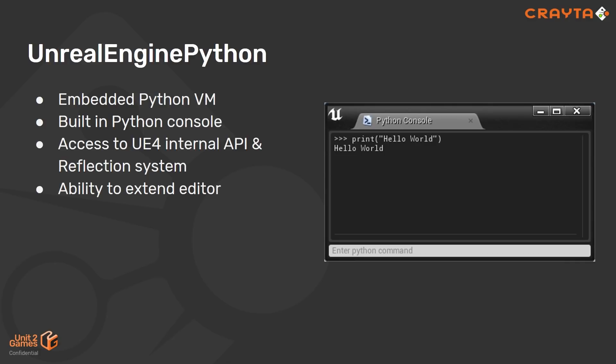The reason we ended up using Unreal Engine Python was because our project started on 4.18, so the official Epic implementation was not available to us. Unreal Engine Python has full access to all the internal API and the reflection system, and you also get some nice editing tools within Unreal itself — it has its own Python console as well as its own editor. You also get lots of options for extending the editor, so if you want to add your own windows, tools, menu entries, and so forth, you can add those really easily.